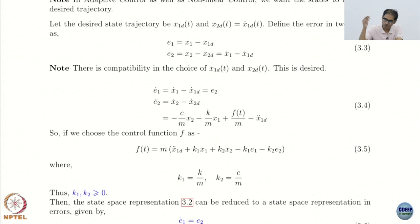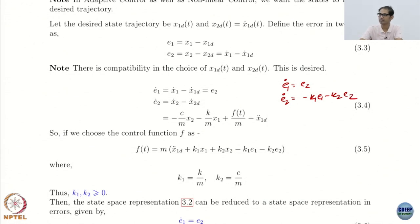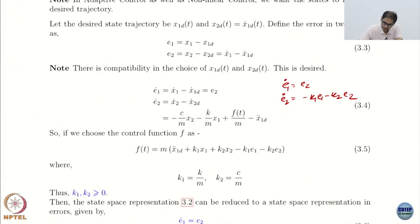How do I drive the errors to 0? I can choose a Lyapunov function, but it is straightforward. I try to get a nice system to follow. I know that a damped oscillator is a nice system and will do a good job. So I choose my control such that the right-hand side looks like that. I chose to cancel these terms and then introduced the nice terms. That is exactly what I did.